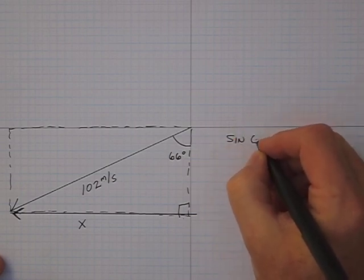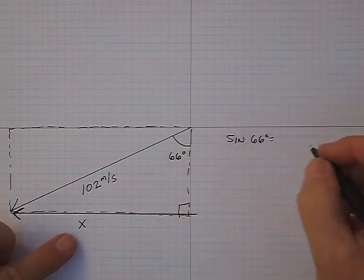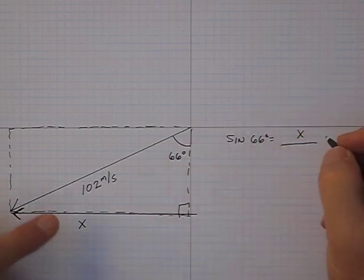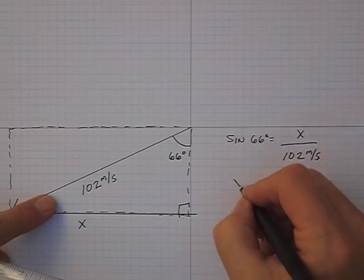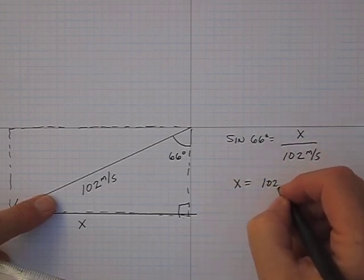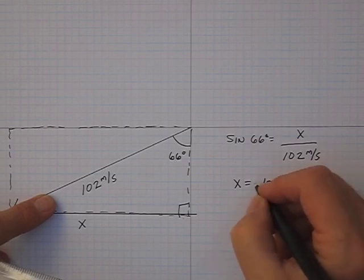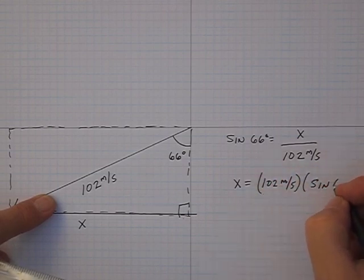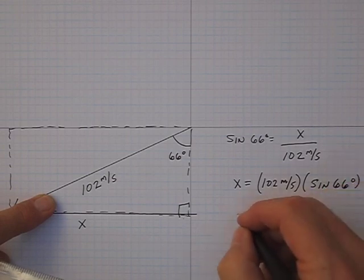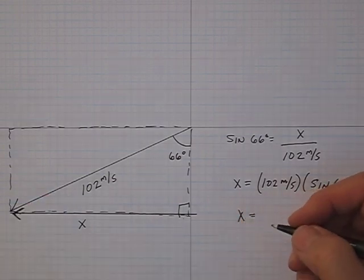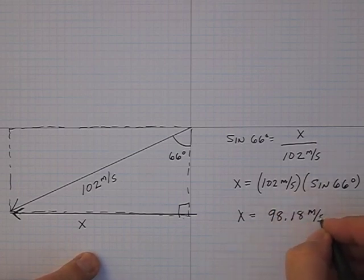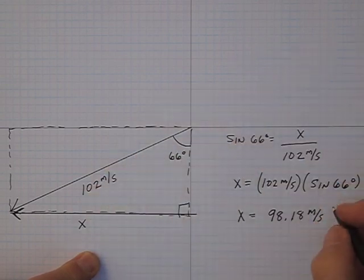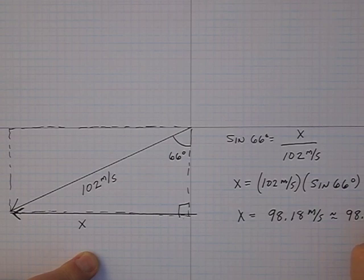So I know that the sine of 66 degrees is equal to the opposite side, which I'll call x, over the hypotenuse which is 102 meters per second. So x is going to be equal to 102 meters per second multiplied by the sine of 66 degrees. And that turns out to be 98.18 meters per second, and we have three significant digits here so we'll round that off to 98.2 meters per second.